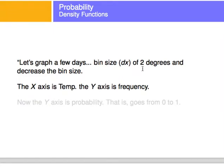So I will track how many days the temperature fell in that little range of two degrees. In the graph that I'm going to show you, the x-axis is the temperature and the y-axis is the frequency.